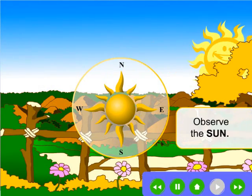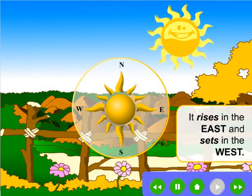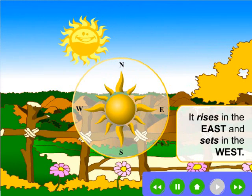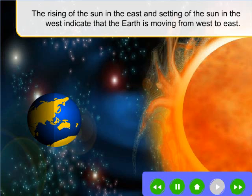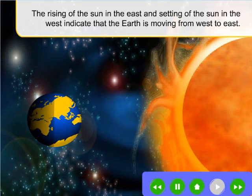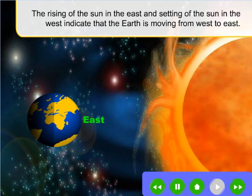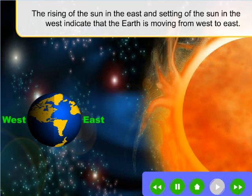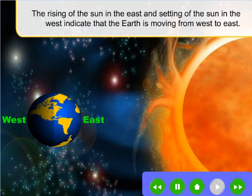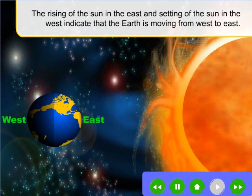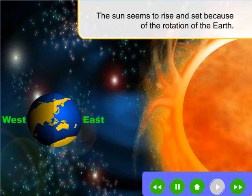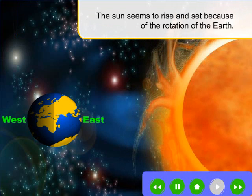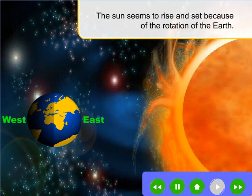Observe the sun. It rises in the east and sets in the west. The rising of the sun in the east and the setting of the sun in the west indicate that the Earth is moving from west to east. The sun seems to rise and set because of the rotation of the Earth.